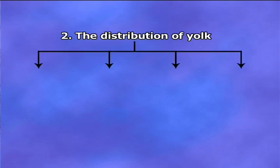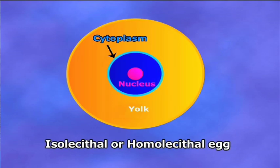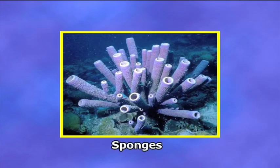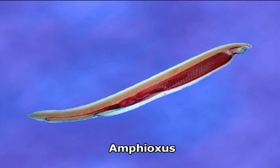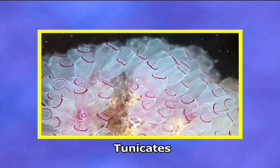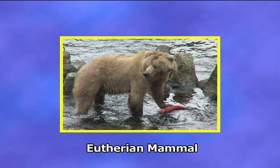Second criteria: according to the distribution of yolk, there are four types of eggs. Isolacetal or homolacetal eggs: in isolacetal eggs, the quantity of yolk is small and it is spread evenly throughout the cytoplasm. Examples are sponges, amphioxus, tunicates, and eutherian mammals.